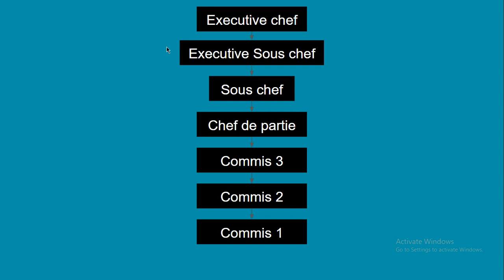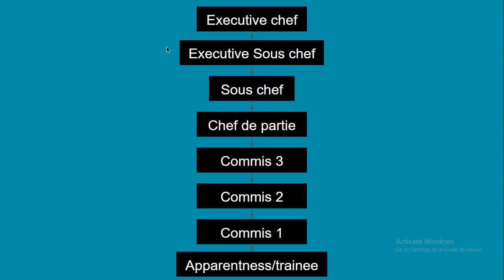Finally, at the bottom of the kitchen hierarchy are the Apprentice and Trainee. These are people who come to learn about the kitchen — about the ingredients, the dishes, and how the kitchen works. They want to grow in the industry and gain experience from the kitchen.